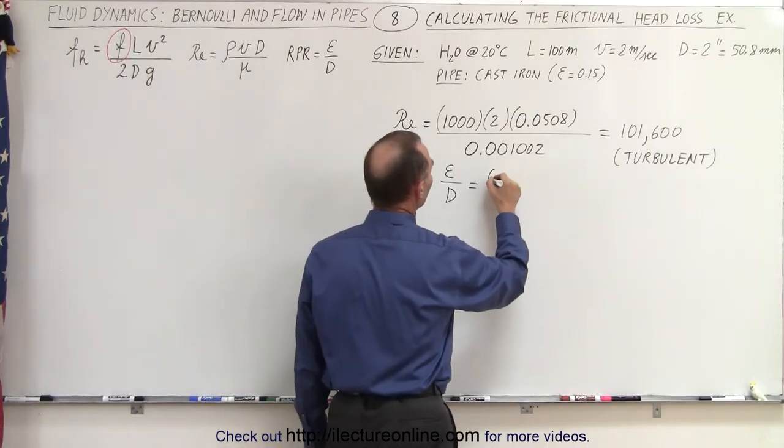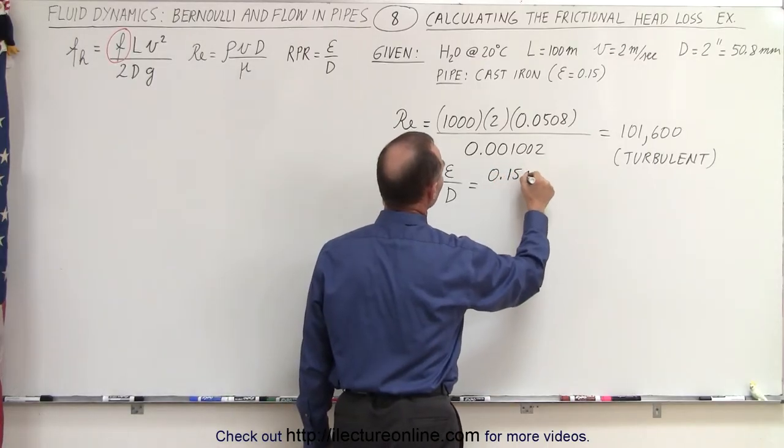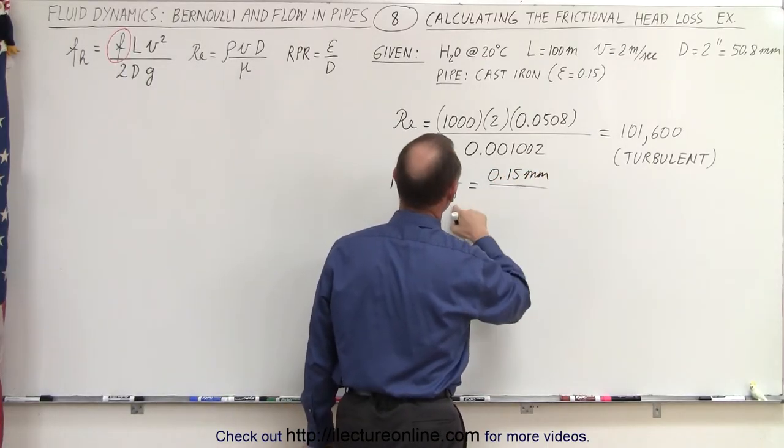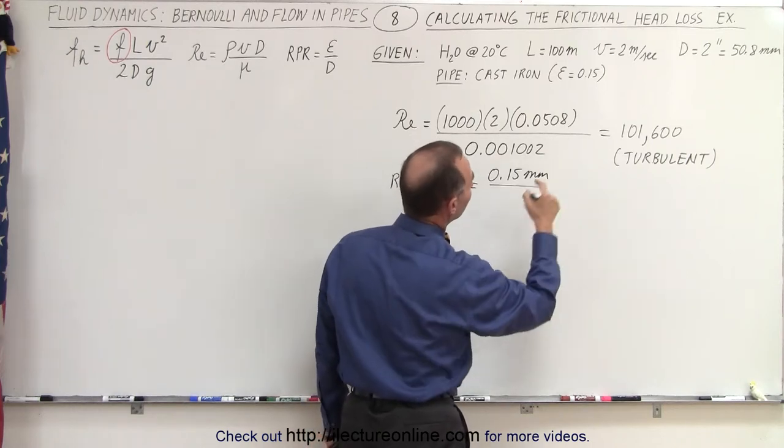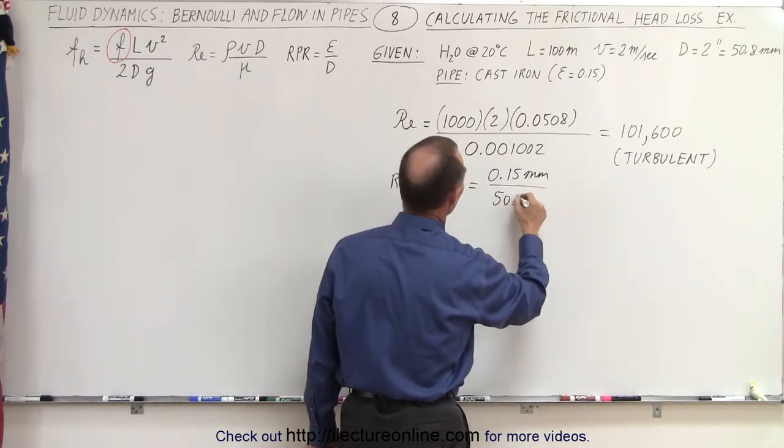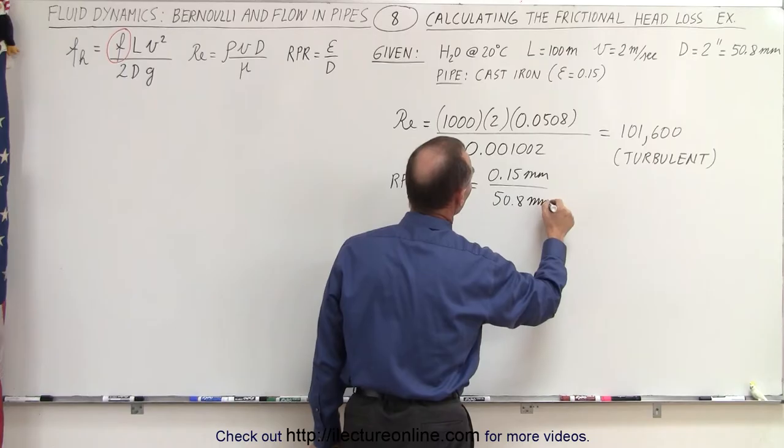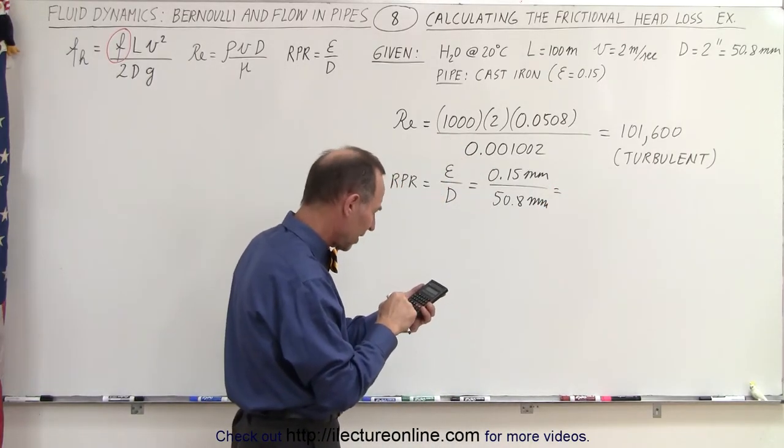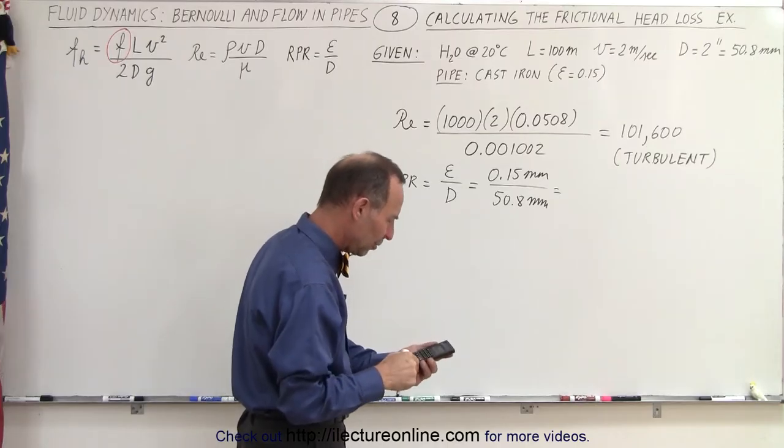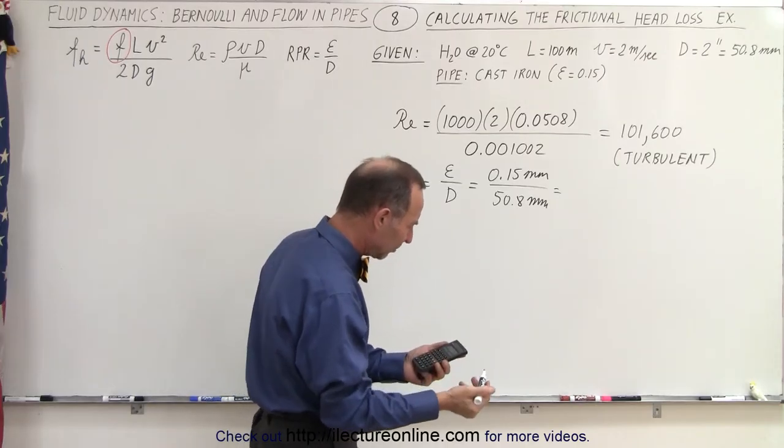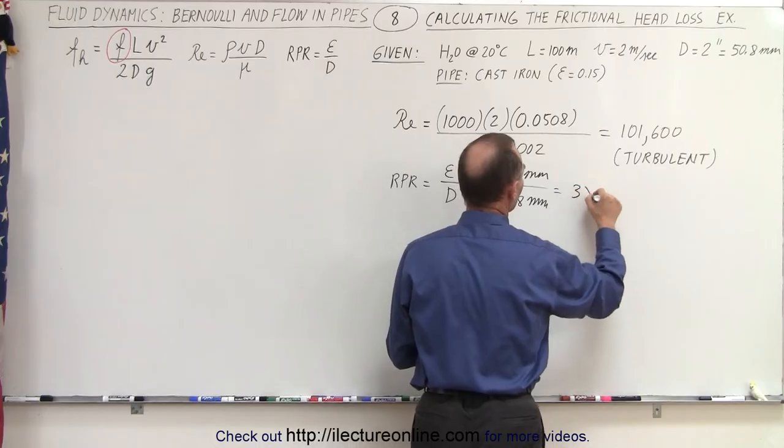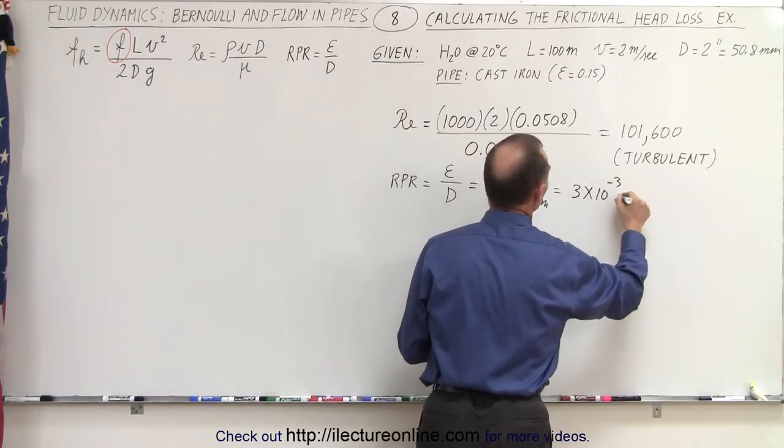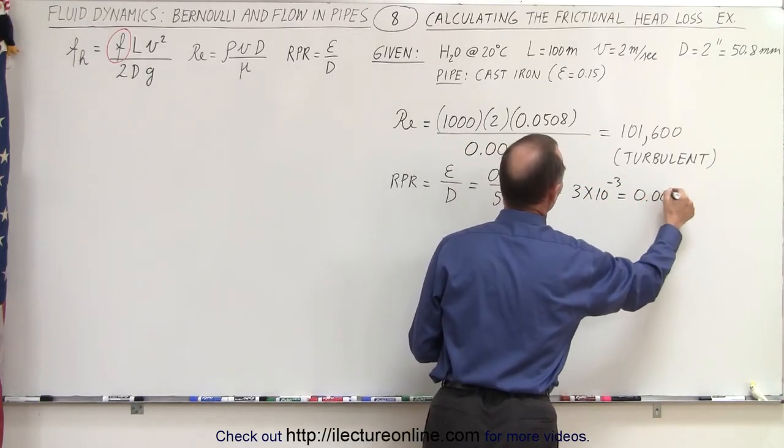So for cast iron that is 0.15 millimeters and then we have to divide that by d and that would be in millimeters 50.8 millimeters. And so when we do that division 0.15 divided by 50.8 that gives us 2.95 or let's say 3 times 10 to the minus 3, which is equal to 0.003.